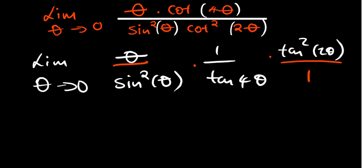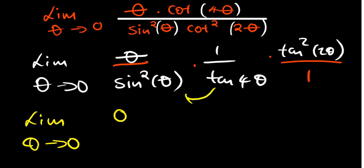What have we noticed here? We've noticed that sine is squared, so we want to arrange things in the correct order. We have the limit as theta approaches 0, and I can move one term to the left so that we have theta over tan 4 theta. This theta on top is not squared, so I don't want to group it with the sine which is squared.